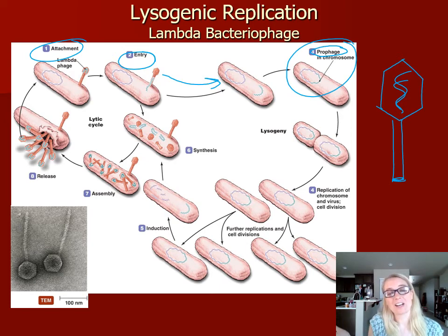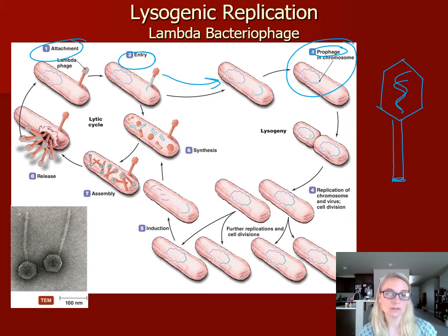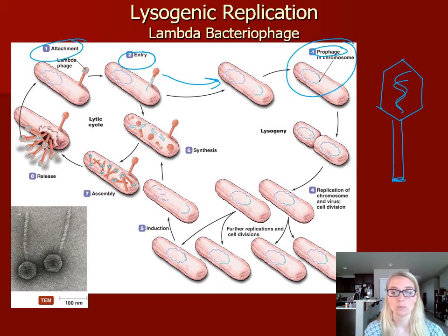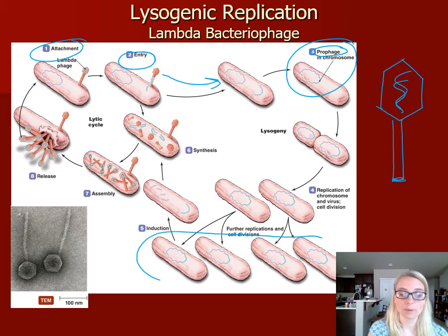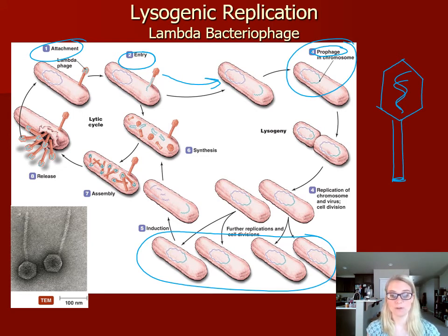The prophage just kind of hides out. As this bacteria replicates normally — one cell becomes two, two becomes four — there's exponential growth. After multiple replications, you have all of these bacteria going about their day, but incorporated within their chromosome is the viral genome, the prophage.